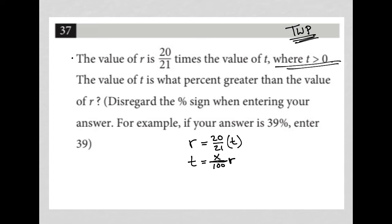So now, given these two things, I can use substitution. It's almost like a system of equations. I can take what R is equal to and replace this R with it. So this becomes T equals X over 100 times 20 over 21 T.